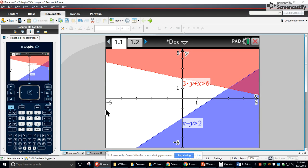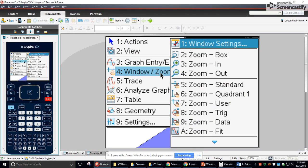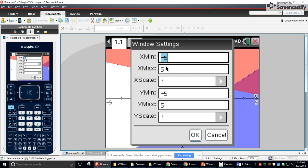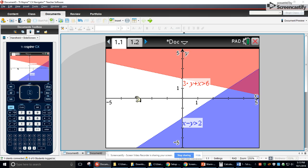So over here, I went to menu, I went to window zoom, window settings, and went negative 5 to 5. I made sure my scale is at 1. That means each tick mark is counting by 1. See, so negative 5, negative 4, negative 3, negative 2, negative 1, 0. So that changes my window settings.